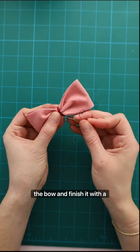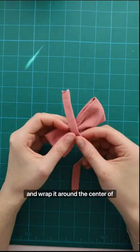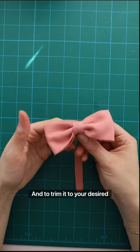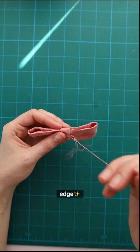Wrap the excess thread around the bow and finish it with a knot. Grab the long skinny rectangle and wrap it around the center of the bow and trim it to your desired length. It does help to have a little bit of extra so you can fold that end under and have a clean edge.